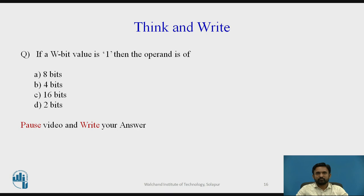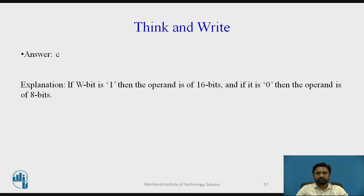Quiz: if the W bit in the instruction format has a value of 1, then the operand is of — please choose the correct answer from the four options. The answer is C: if the W bit is 1, the operand is 16 bits; if the W bit is 0, the operand is 8 bits.